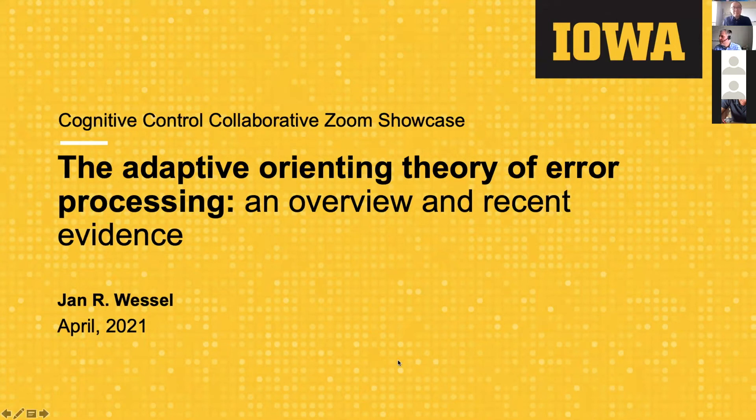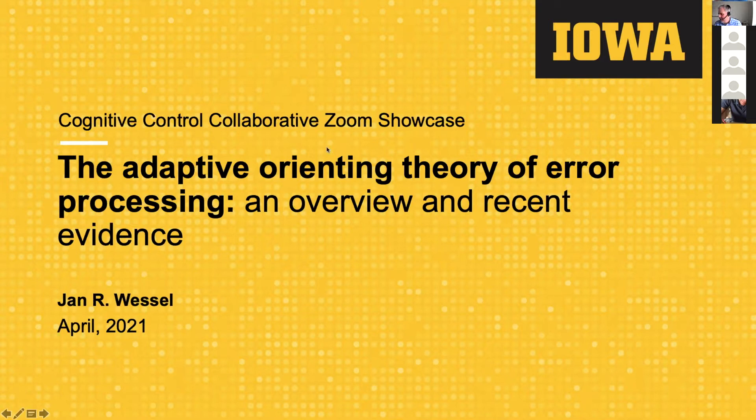In my second talk today I want to talk about error processing. We've learned a lot about what the brain does right, and what happens when complicated things are being solved and how they're being solved by the brain. Now I want to talk about things that fascinate me because I'm an oaf and I make errors all the time.